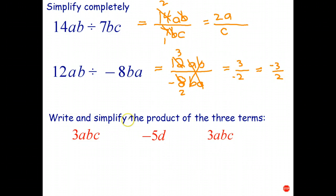And the last one. Write and simplify the product of the three terms. Well, you need to remember that the word product means you're multiplying the terms together. So it means 3abc times negative 5d times 3abc. So let's just do this in one step. Again, this is 3 times a times b times c and so on. So let's multiply the coefficients first. 3 times negative 5 is negative 15. Negative 15 times 3 is negative 45.